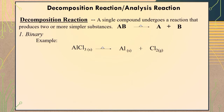To balance chlorine, we think of the least common multiple, and that is 6. So we simply place a coefficient of 3 before the chemical symbol of chlorine, and a coefficient of 2 before the chemical formula of aluminum chloride. Finally, adjust the coefficient of aluminum on the product side by placing a coefficient of 2, making aluminum with two atoms both on the reactant and product side, and making the equation balanced.